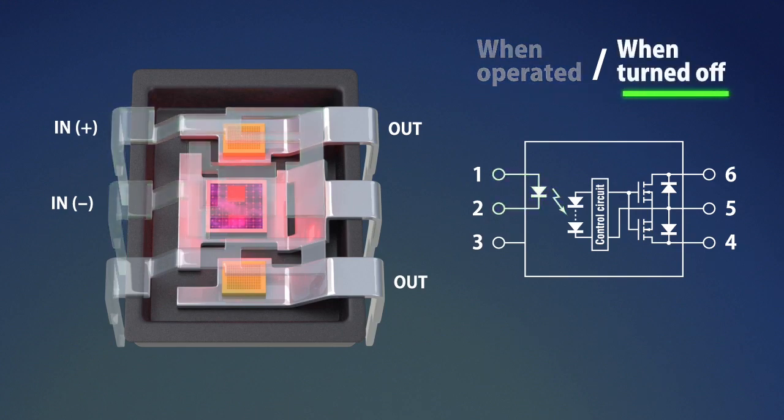PhotoMOS will be turned off when the current at the input terminal is cut off. The LED stops emitting light and the voltage of the photoelectric element decreases. When the voltage supplied from the photoelectric element decreases, the control circuit rapidly discharges the gate charge of MOS FET. This operation makes MOS FET stop conducting and turns off the load.